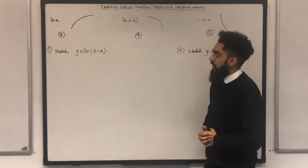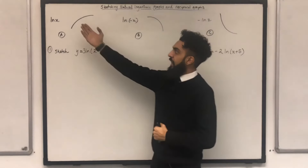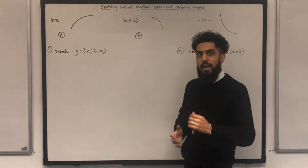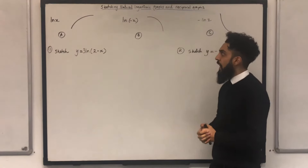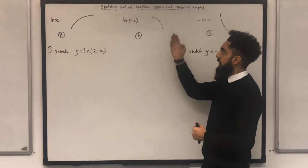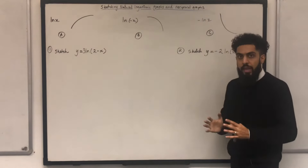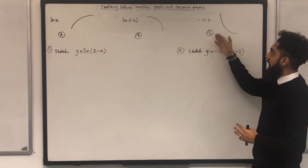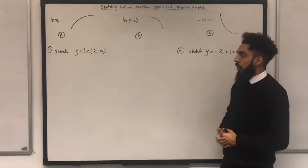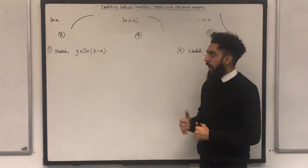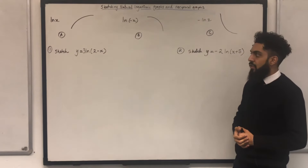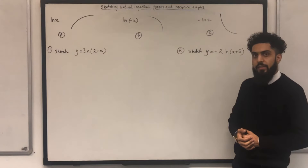The shape of ln(x) is shape a. The shape of ln(-x) is shape b. The shape of -ln(x) is shape c. Now, question number 1: I would like to sketch y = 3ln(2 - x).